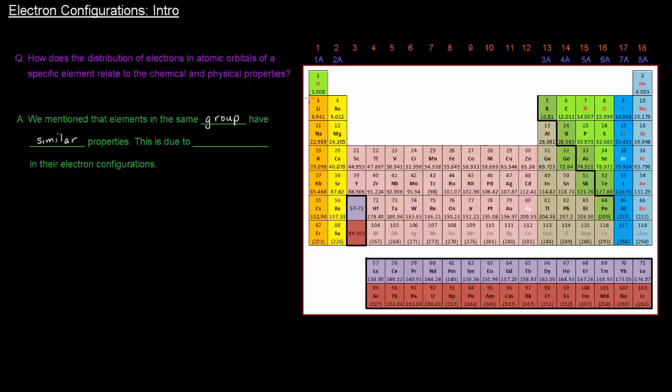So, for instance, the alkali metals in group 1a have similar properties and reactivity. Alkaline earth metals in group 2 have similar properties. Halogens all have similar properties. This is due to similarities in their electron configurations, which basically describe the distribution of electrons in the atomic orbitals of that element or atom.